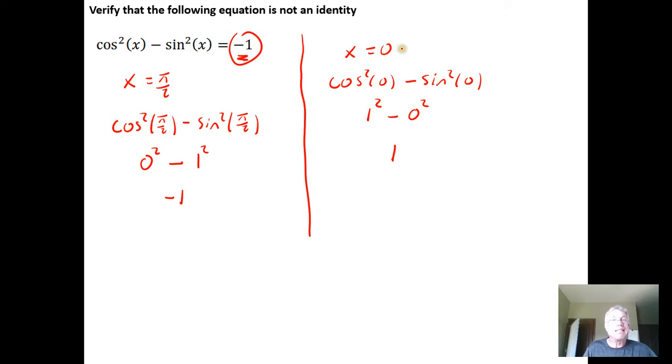So there is a value of x for which the left side isn't the same as the right hand side, so it is not an identity. This is the counterexample. When x equals zero, the cosine squared of x minus the sine squared of x does not equal one. And so the equation is not an identity.